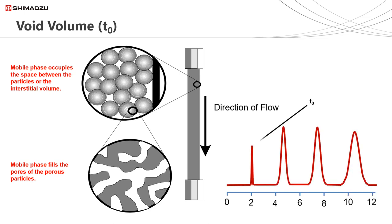Looking at the chromatogram on the screen as an example, the peak at two minutes is marking our void volume. The time this peak takes to elute is known as T0. In reverse phase HPLC, we often use uracil as an unretained analyte to calculate the void volume at T0. At a flow rate of one millilitre per minute, a two millilitre void volume would give a T0 of two minutes. Increasing the flow rate would decrease the value of T0, and decreasing the flow rate would increase the value of T0, but the actual void volume remains constant.